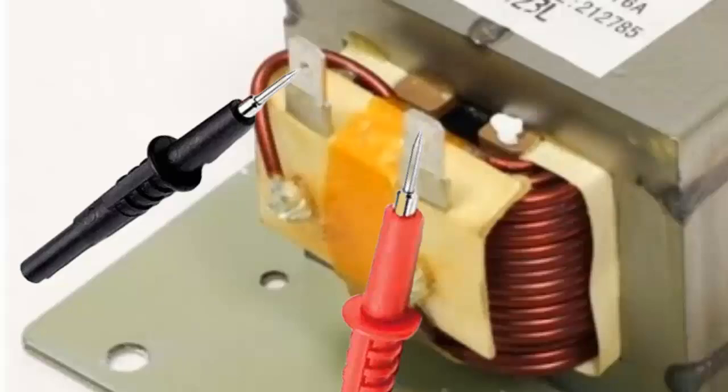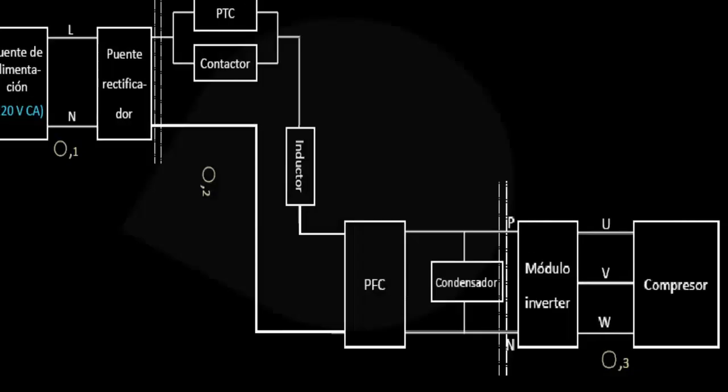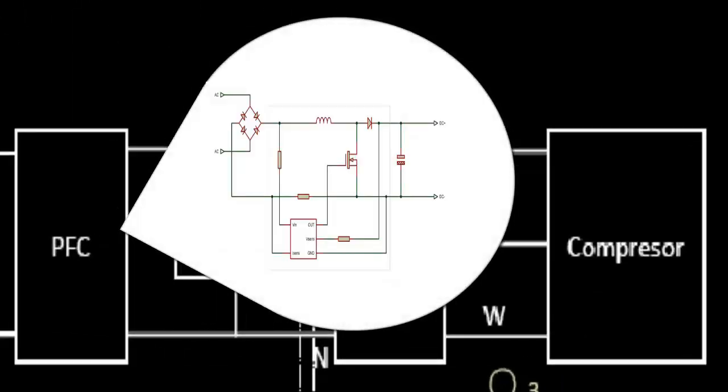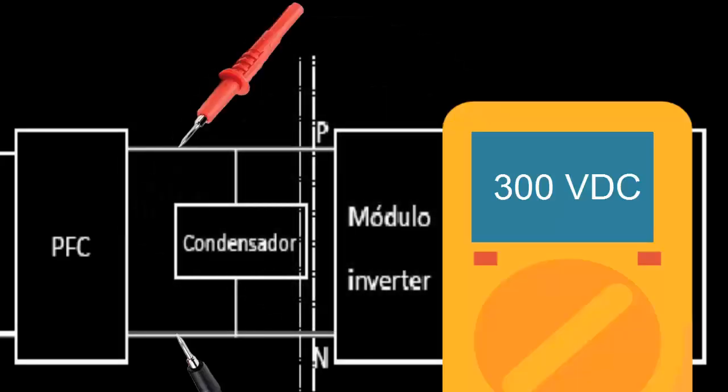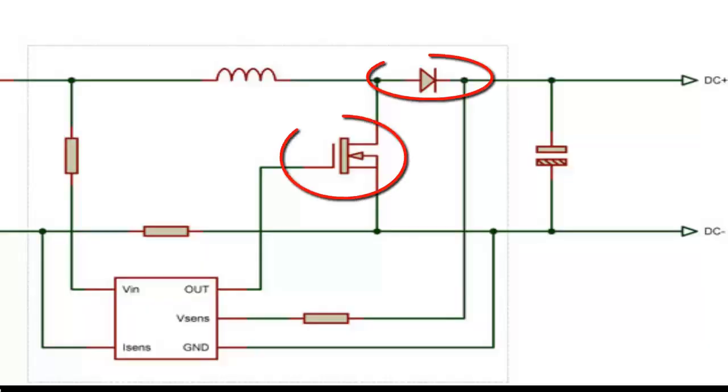Point 7: The PFC circuit is crucial for improving energy efficiency, reducing interference, and stabilizing the equipment's operation. Test the output voltage of the PFC circuit, check the state of the recovery diode, and observe the condition of the IGBT transistor.